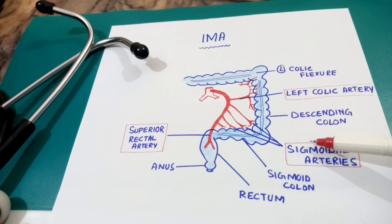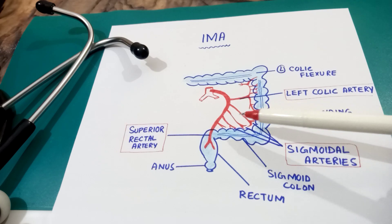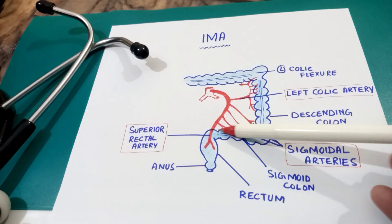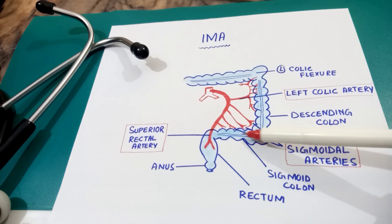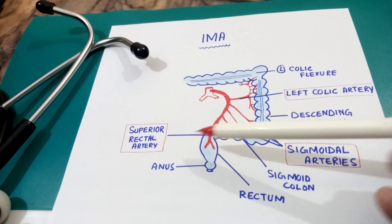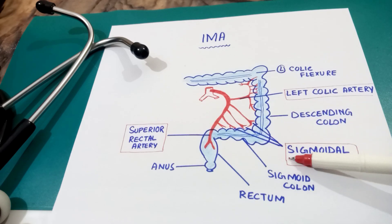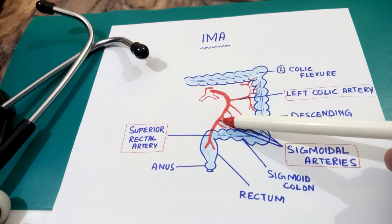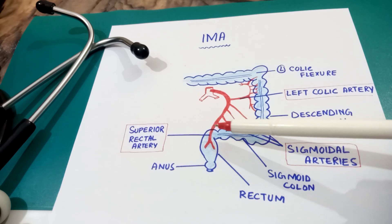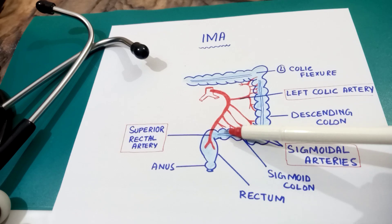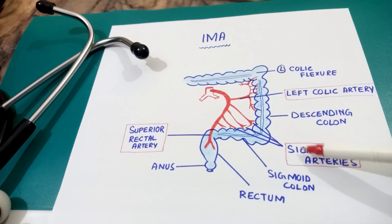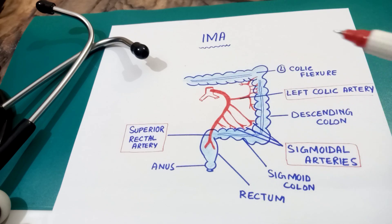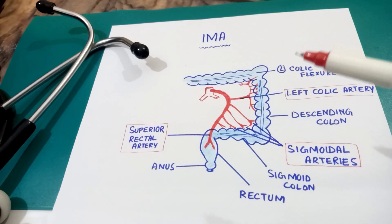One of the sigmoidal arteries anastomoses with the colic branch of the superior rectal artery. So between these two arteries — a branch of the superior rectal artery and one of the sigmoidal artery branches — anastomosis occurs.